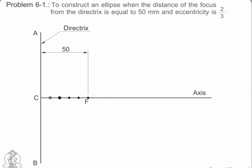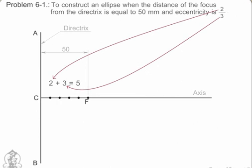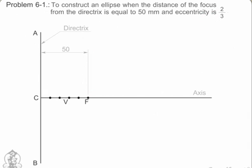Divide CF into 5 equal divisions, the sum of numerator and denominator of the eccentricity. Mark the vertex V on the third division point from C. Thus, eccentricity e equals VF upon VC equals 2 by 3.